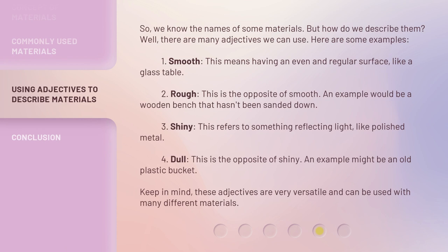So, we know the names of some materials. But how do we describe them? Well, there are many adjectives we can use. Here are some examples. 1. Smooth: This means having an even and regular surface, like a glass table. 2. Rough: This is the opposite of smooth. An example would be a wooden bench that hasn't been sanded down. 3. Shiny: This refers to something reflecting light, like polished metal. 4. Dull: This is the opposite of shiny. An example might be an old plastic bucket. Keep in mind, these adjectives are very versatile and can be used with many different materials.